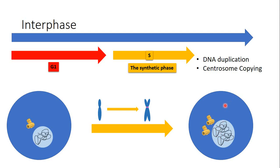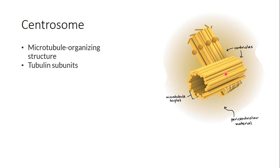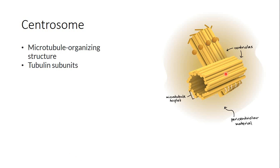Let me give you a little idea about the centrosome. The centrosome has structures of centrioles, and it can produce microtubules out of tubulin subunits. This centrosome assembles tubulin subunits together to give microtubules that will be used later in the mitotic phase to build the mitotic spindle, which is essential in order to separate the two sets of DNA.